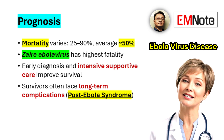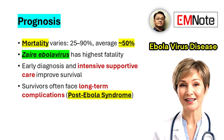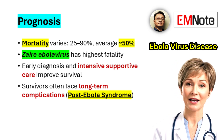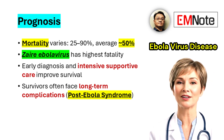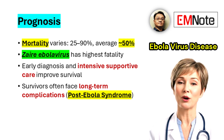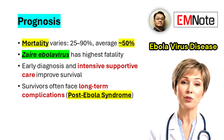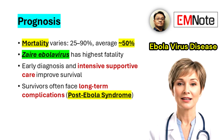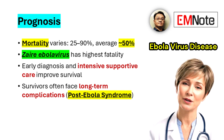The prognosis of Ebola virus disease varies depending on several factors, including the virus species, viral load, patient's health status, and the timeliness and quality of care. Case fatality rates have ranged from 25% to 90%, with an overall average of approximately 50%. Infections with Zaire Ebola virus are associated with the highest fatality rates. Early diagnosis and aggressive supportive care, along with access to specific therapeutics, have significantly improved survival rates.